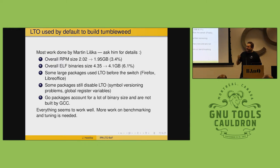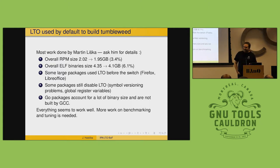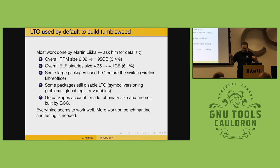A question about SPEC with LTO: one particular benchmark — I believe it's Fortran — gave a compiler ICE during the LTO phase because of a variable defined in both Fortran and C++ or something like that. I looked at it yesterday; I fixed it and sent the patch, but it's not in any release GCC yet. I will fix it today — it's ready.